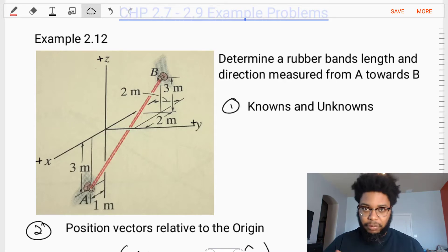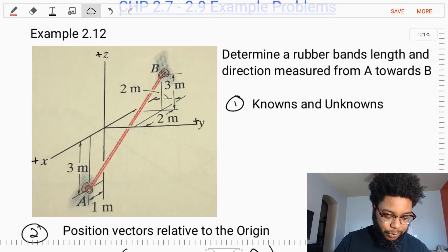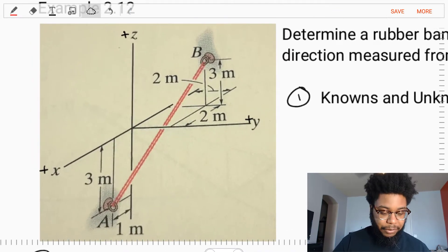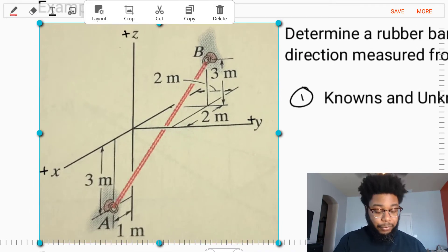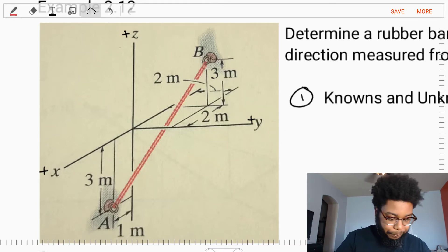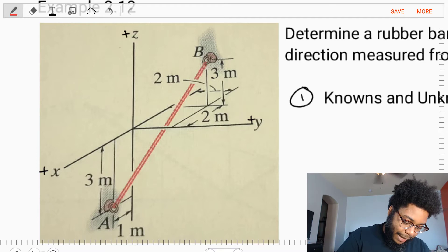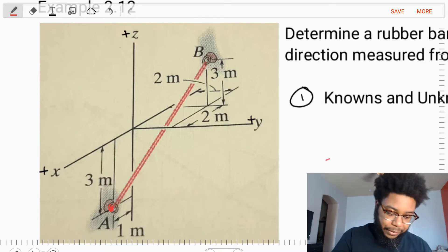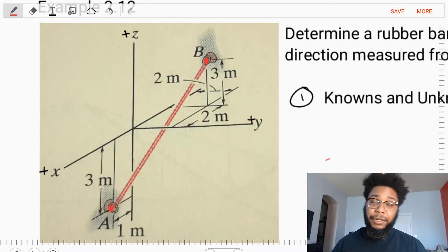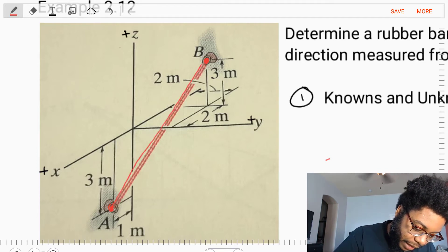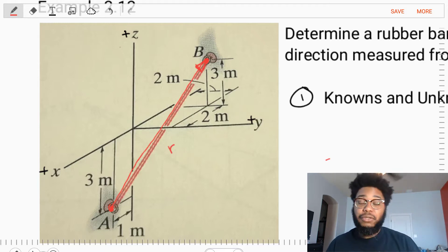In this example, we are asked to determine a rubber band's length and direction measured from point A towards point B. Let's look at the diagram to get a better understanding. In the diagram, we have a 3D problem with an x, y, z coordinate system. We have a red rubber band stretched between point A, which is down below, and point B, which is up here.